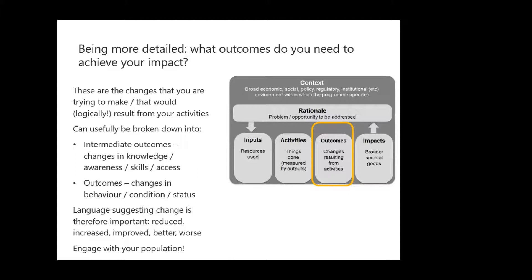A couple more things on outcomes. First: engage with your population or subgroup — we've really been encouraging people in the core teams element of the program to engage with their population, to understand from their perspective what outcomes matter, getting the voice of the population and the citizen into the process of defining outcomes. Second: start thinking about what mechanism links your activities to your outcomes — is it a change in awareness, a change in condition, or a change in resources given to someone through the activity that allows them to realise the change in outcomes? What's the mechanism linking those two components?